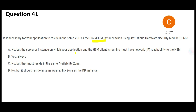Option A says no, but the server or instance on which the application and HSM client is running must have the same network IP reachability. Yes — both need not be on the same VPC; they can be in different VPCs as long as there is network connectivity and IPs can be reached. Option B says yes, always — but this is not a hard requirement, so both need not be on the same VPC.